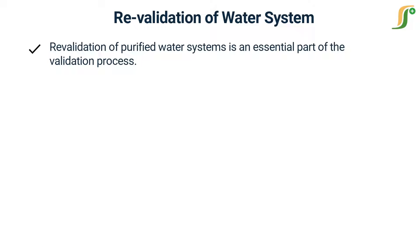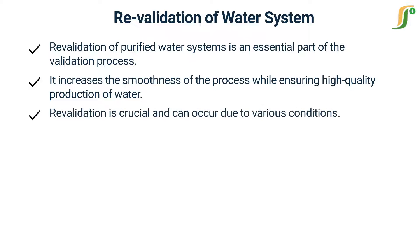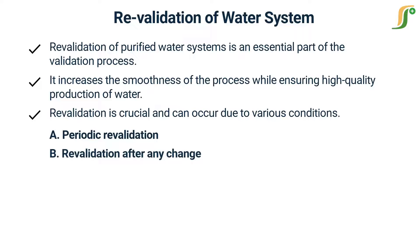Revalidation of purified water systems is an essential part of the validation process. It increases the smoothness of the process while ensuring high quality production of water. Revalidation is crucial and can occur due to various conditions. There are two main conditions: first, periodic revalidation; second, revalidation after any change.